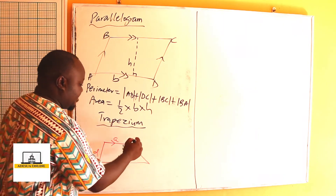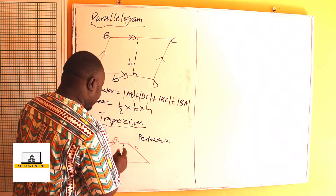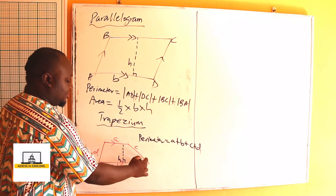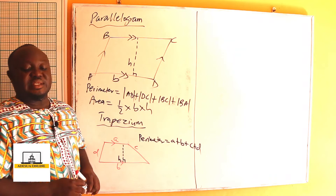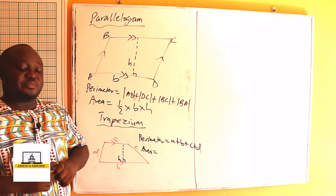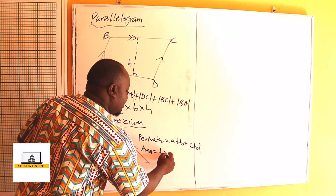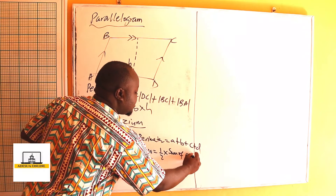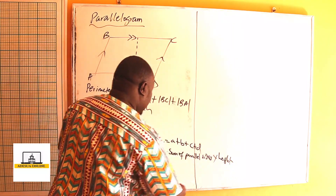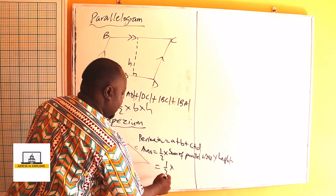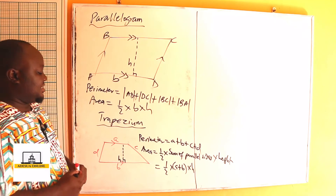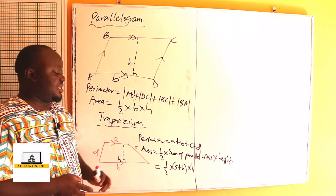The perimeter of a trapezium is equal to A plus B plus C plus D — the addition of the length of each side gives us the perimeter. The area of a trapezium is equal to half multiplied by the sum of the parallel sides times the height. So that is half times (A plus B) times H, and this gives us the area of a trapezium.